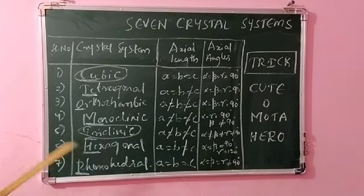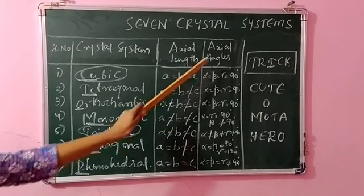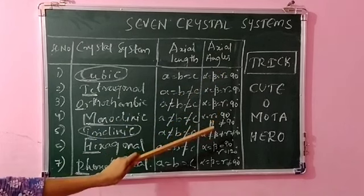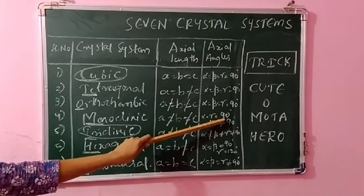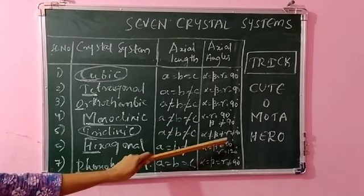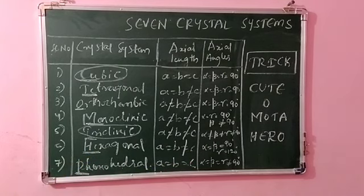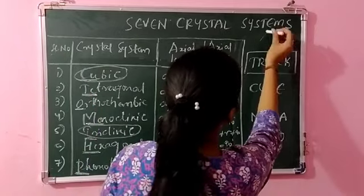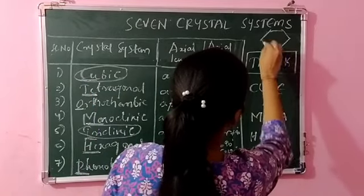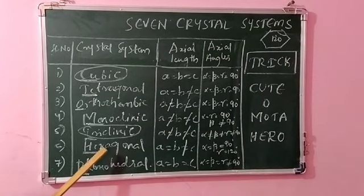For monoclinic: alpha and gamma are equal to 90°, while beta is not equal to 90°. For hexagonal: alpha = beta = 90° and gamma = 120°. You can remember the 120° for hexagonal because a hexagonal ring system has one angle of 120°. This completes all seven crystal systems with their axial lengths and axial angles.